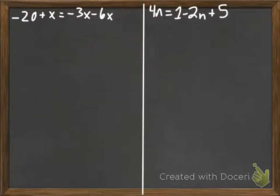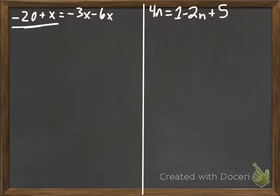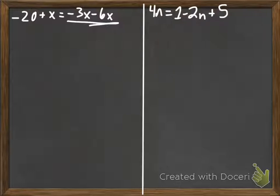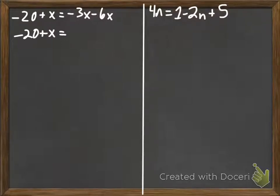Here's a couple of examples. We're going to start on the left: we have negative 20 plus x equals negative 3x minus 6. On the left side, we don't have any like terms, so we can't combine. On the right, we see negative 3x minus 6x — they're both x terms, so we can combine them. It says negative 3 subtract 6, which is negative 9, and then the x tags along.